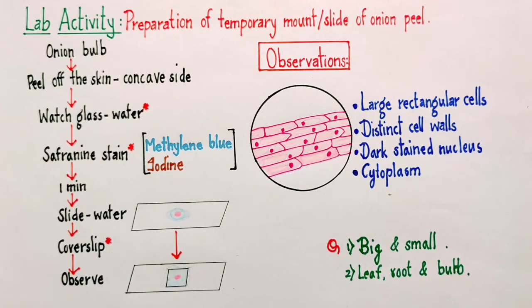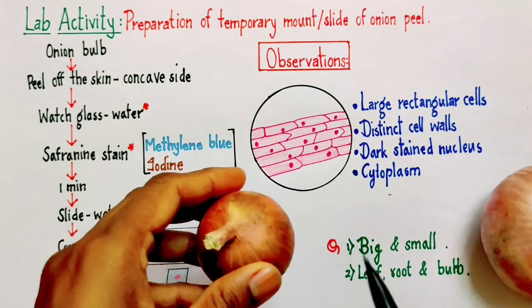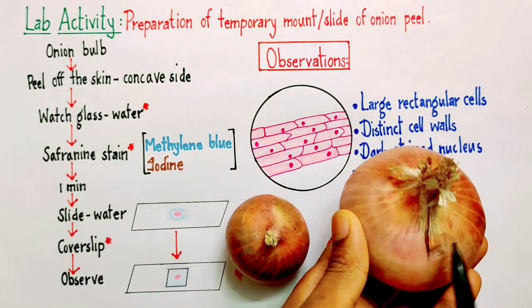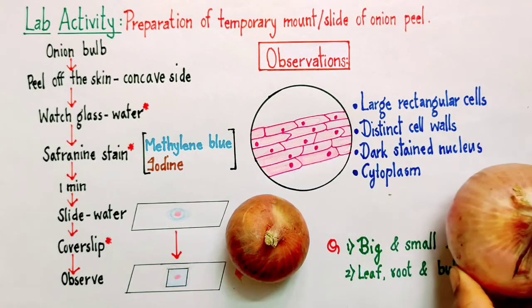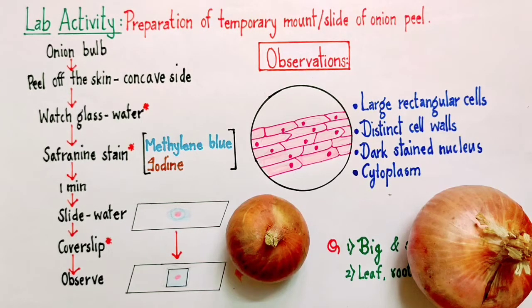I have two questions for you. Suppose there are two students, and one out of them prepares a slide using this onion, and another student prepares a slide using this onion. My question to you is that will there be any difference in the cell size what they are going to observe after their slide preparing? The answer is no.